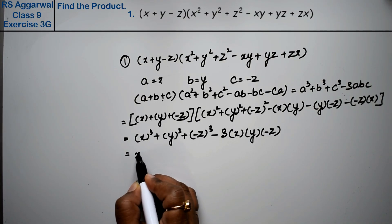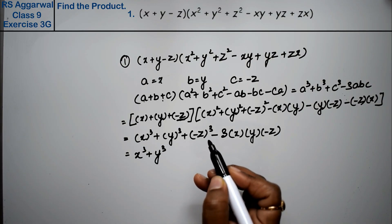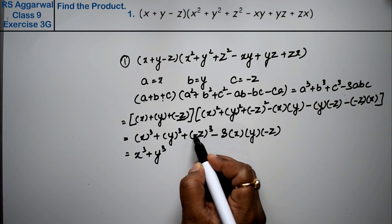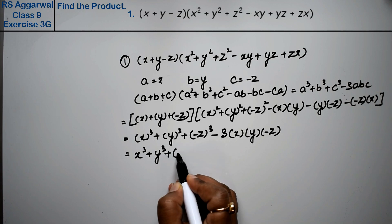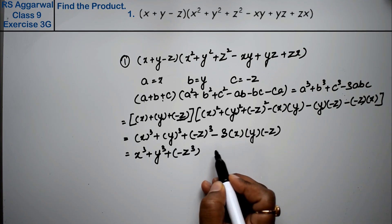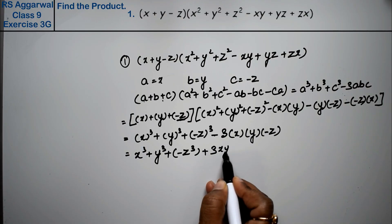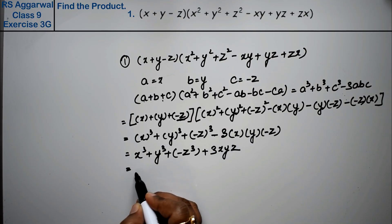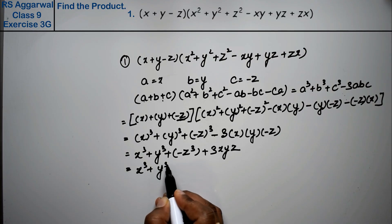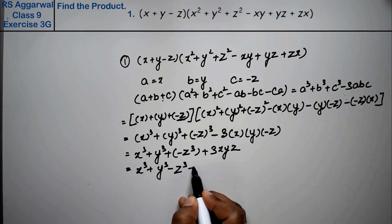Now see what happens: x³ + y³, now here power is odd so the negative sign inside will remain, minus z³, minus into minus becomes plus, so 3xyz. Now if we open the brackets, we get x³ + y³ - z³ + 3xyz.